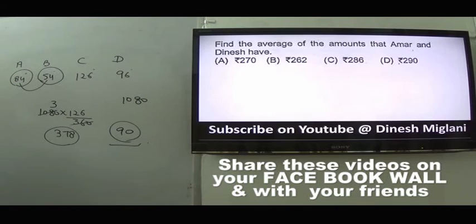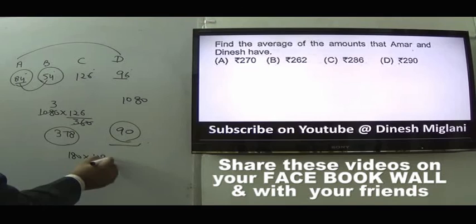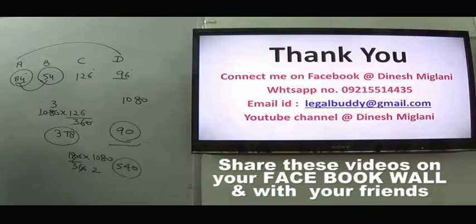Average of amounts with A and D: angles 84° + 96° = 180°. Sum = 1080 × 180/360 = 540. Average = 540/2 = 270. Answer is A. This concludes the second practice session of SSC CGL pre-examination mathematical section covering all 50 questions.